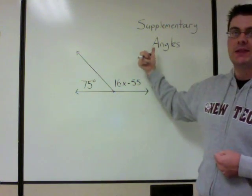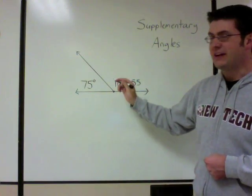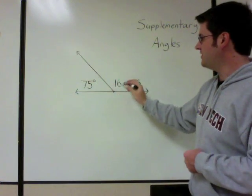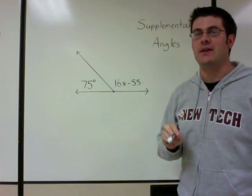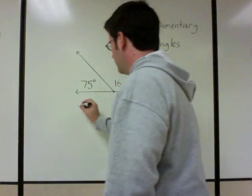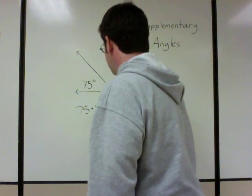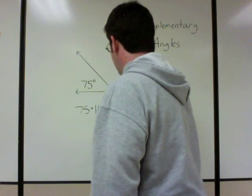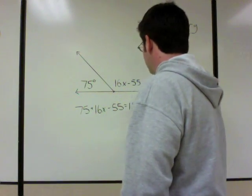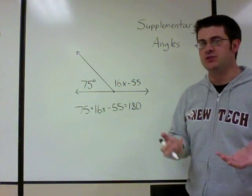Using the fact that these are supplementary angles, we set up the equation: 75 plus 16x minus 55 equals 180.